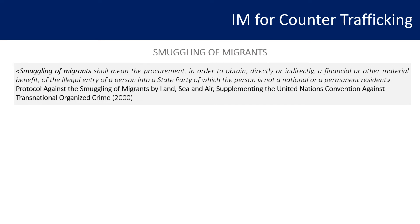We now need to clarify the difference between smuggling of migrants and trafficking in persons, because they are often mistaken for one another. The definition of smuggling of migrants is given by the Protocol Against the Smuggling of Migrants by Land, Sea and Air, supplementing the UN Convention Against Transnational Organized Crime of 2000 — the same year and convention as the Palermo Protocol on trafficking in persons.